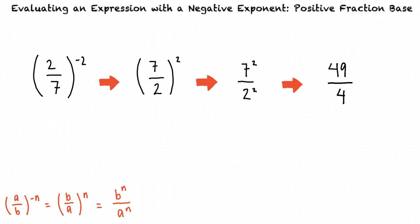Good job. This tells us that 2 sevenths raised to the power of negative 2 can be rewritten as 49 over 4.